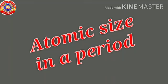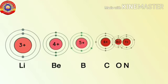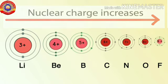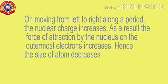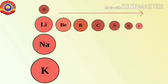Now let's discuss how atomic size varies in a period. See the Bohr atom model representation of elements with atomic numbers 3 to 9 in the second period of the periodic table. Can you see an increase in the number of shells here? No. So what happened to the nuclear charge? The nuclear charge is increasing. On moving from left to right in the periodic table, the nuclear charge increases, and the force of attraction on the outermost electron and the nucleus increases. Consequently, the size of atom decreases.